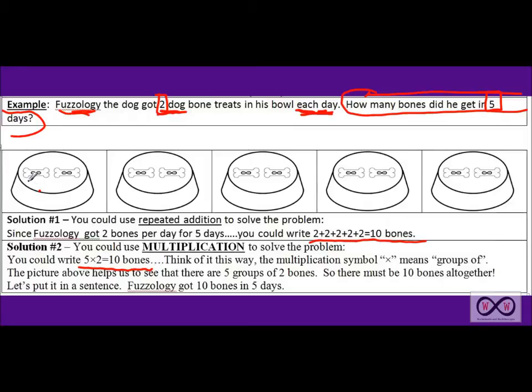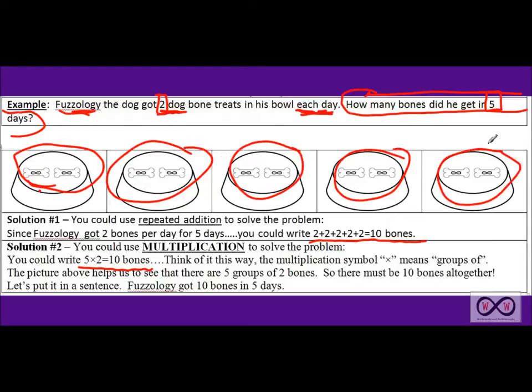So we have five times two or five groups of two. And you can see that that would be two, four, six, eight, ten. Look at that. I skip counted to get my answer. In other words, I used multiples.